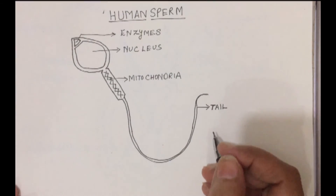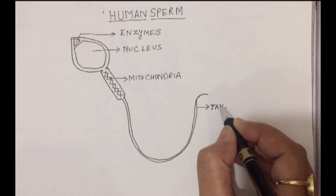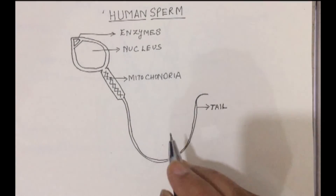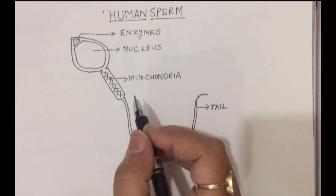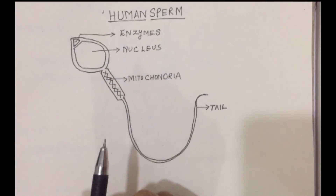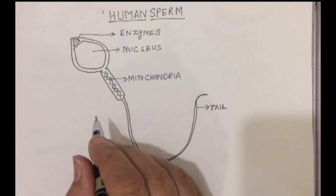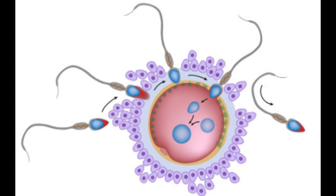Millions and millions of sperms are secreted from the testis. Millions and millions of sperms are present in the semen, and only one sperm is able to reach the nucleus — on a first come, first serve basis. The first nucleus which reaches the nucleus of the ovum gets to fertilize it. Only a handful of sperms reach the oviduct, and among those, only some are able to penetrate into the ovum. But the first sperm whose nucleus reaches the nucleus of the ovum fertilizes it and produces a zygote.